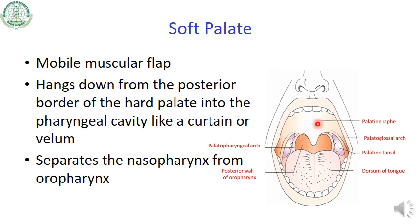In this diagram, you can make out the pharyngeal raphe, the palatoglossal arch, the palatopharyngeal arch, and the palatine tonsil. This whole portion — this portion is called the uvula, which is part of the soft palate as well. And from this opening, you can see the posterior wall of the oropharynx.